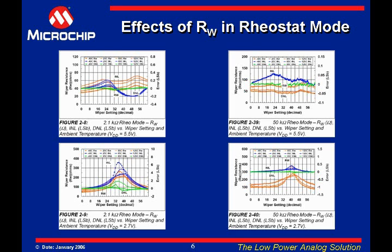When looking at a device with a much higher RAB value — for example, 50K ohm — the step resistance is much larger, approximately 790 ohms. So even though the wiper resistance value has a large variation, it is still much smaller than a single resistive step. This means INL and DNL errors can remain less than one LSB. The effect of wiper resistance variation on INL and DNL decreases as the total resistance RAB value increases.